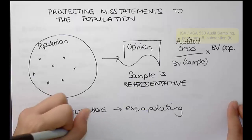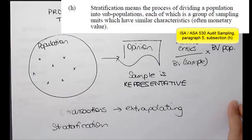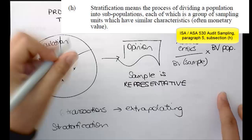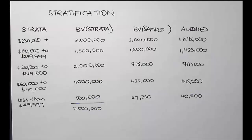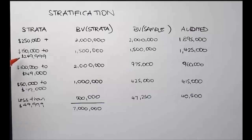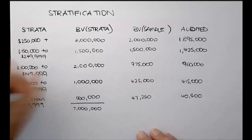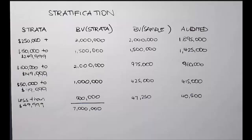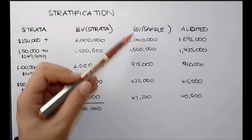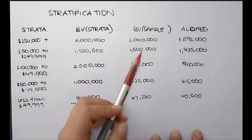Priya's question relates to what happens when we use stratification. Stratification is when I take my population and break it into chunks. I've got a company here with a range of transactions: $250,000 or more; $150,000 to $249,999; $100,000 to $149,999; $50,000 to $99,999; and less than $49,999. These could be sales, accounts receivable, purchases — anything. I've broken it into strata with book values for each stratum and for each sample.